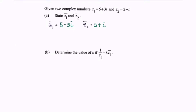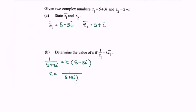Part B: determine the value of k if 1 over z sub 1 equals k multiplied with the conjugate of z sub 1. So 1 over (5 plus 3i) equals k multiplied with (5 minus 3i). We rearrange so that k is the subject: k equals 1 over (5 plus 3i) multiplied with (5 minus 3i). Using the formula a squared plus b squared for the denominator, we get k equals 1 over (25 plus 9), so k equals 1 over 34.